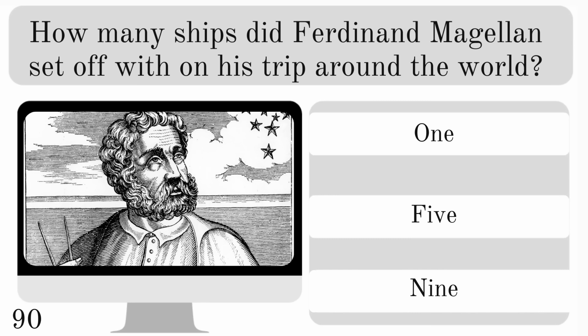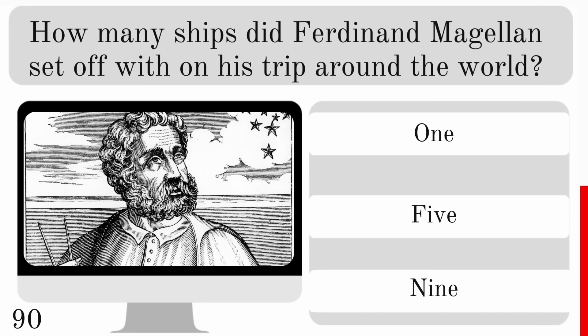How many ships did Ferdinand Magellan set off with on his trip around the world? One, five or nine? And the correct answer is five.